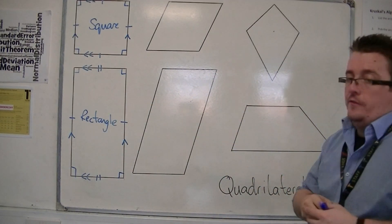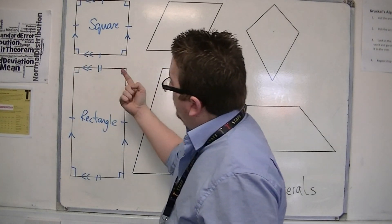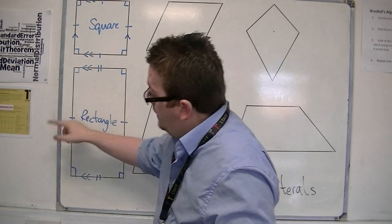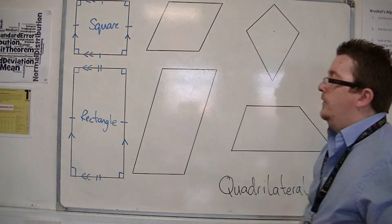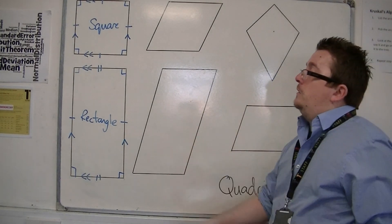Now, it doesn't have the diagonal as a line of symmetry, because that corner would flip over. If you folded the shape, it would appear over here. So it doesn't have more than two lines of symmetry. So that's the rectangle.